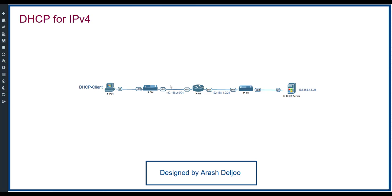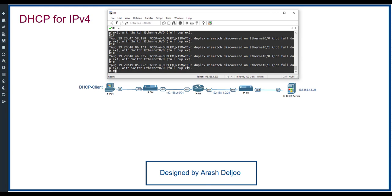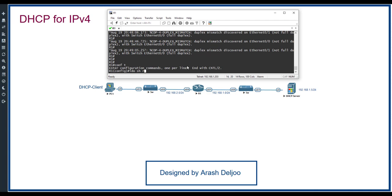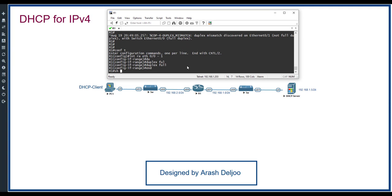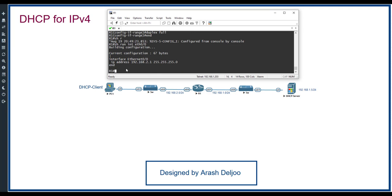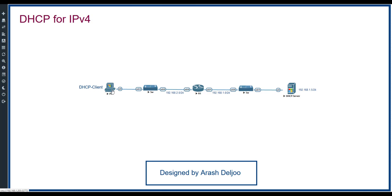Let me show you the scenario. Here we have R1 connected to a switch and then to PC1, and R1 connected to another switch with the DHCP server. Until now I have not configured 'ip helper-address' on Router 1's interface. Let me show the configuration — do 'show run'. The interface eth0 has only an IP address configured.